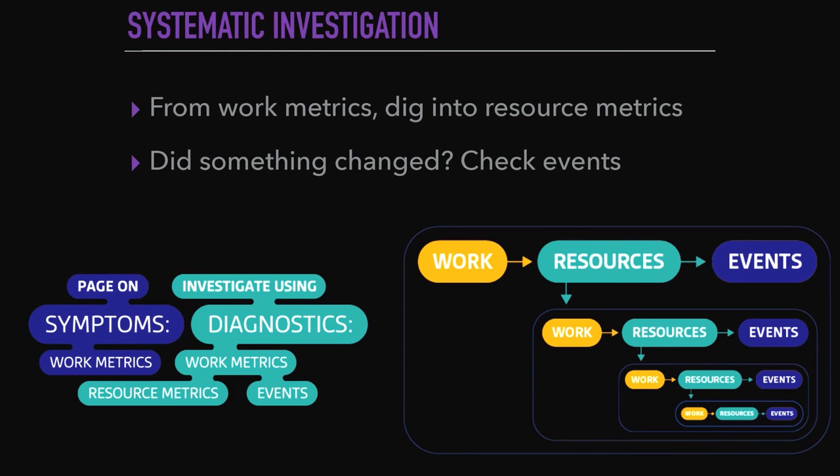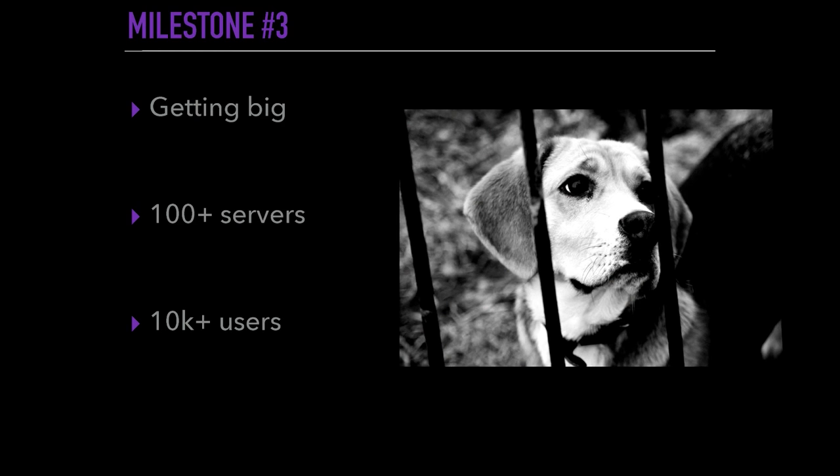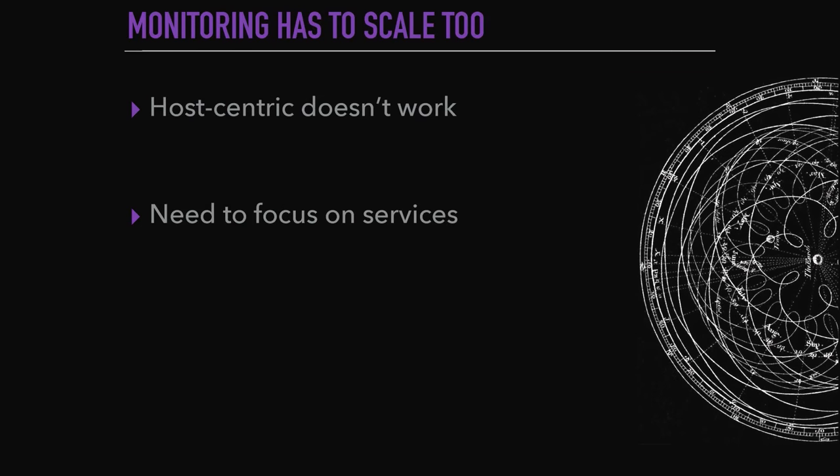It is to always start from the symptoms — mostly the work metrics — and then start to iterate, to go down, looking at the metrics and events in general, to keep going down to understand where the issue is coming from. Third milestone: we are getting big, we have more and more servers, more and more users. We reach a point where looking at hosts individually no longer scales, and you need to focus on the services themselves.